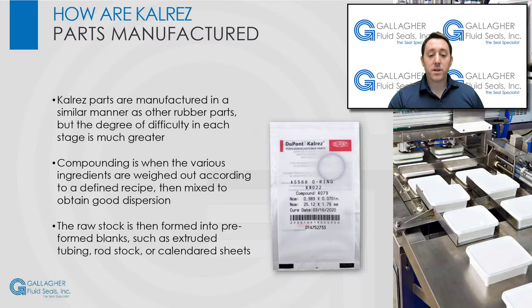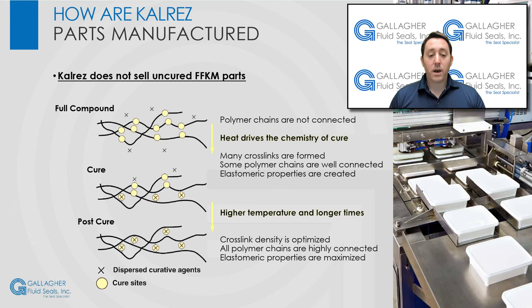CalRez parts are manufactured in much the same way as any other rubber part, except that the degree of difficulty in each stage is much greater. During formulation, the appropriate ratio of compound ingredients is determined to optimize properties of the final compound. Compounding is when the various ingredients are weighed out according to a defined recipe, then mixed to obtain good dispersion, generally on a two-roll mill. The raw stock is then formed into preformed blanks such as extruded tubing, rod stock, or calendared sheets for final molding into standard and custom parts. Although some cross-linking takes place in the mold, CalRez is primarily cross-linked during post-cure. You should know, CalRez does not sell uncured FFKM parts.